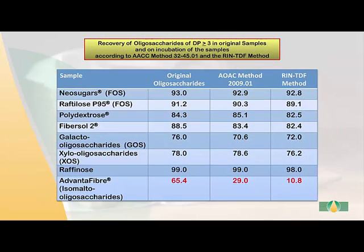We see the recovery of oligosaccharides using the rapid integrated total dietary fiber procedure and AOAC method 2009.01. For all oligosaccharides except Advanta fiber, which is isomaltooligosaccharides, the recovery is very similar with both methods, even though the rapid procedure uses much higher enzyme levels. This demonstrates the purity of these enzymes and that they are up to the mark for the analysis.